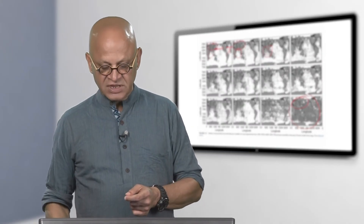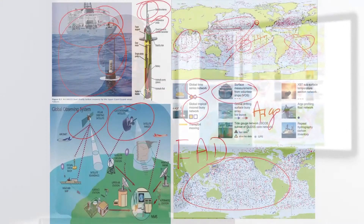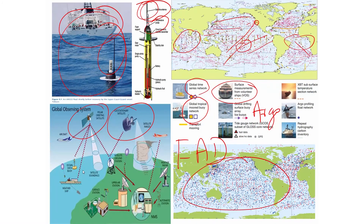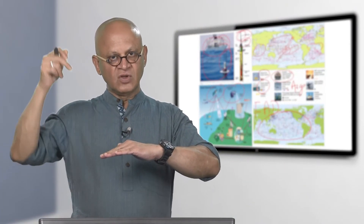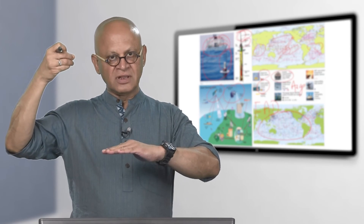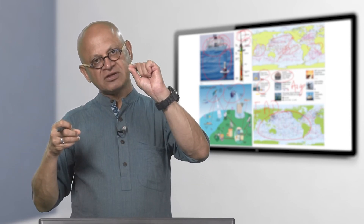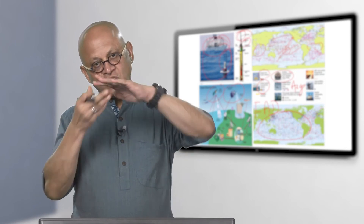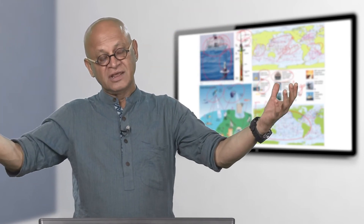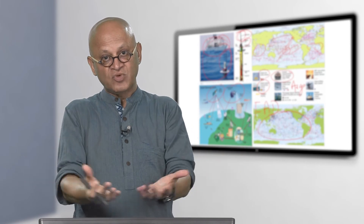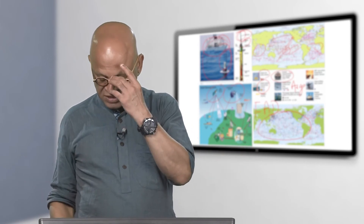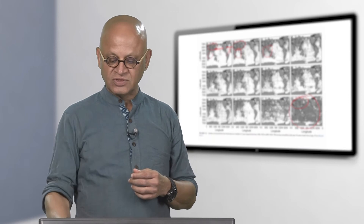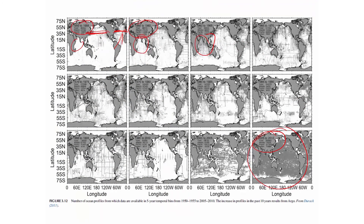Why do we need profiles? Satellites can look at the surface only — whether radiation coming from the surface or a laser measuring return, it can only penetrate a few centimeters to a few meters. The ocean is several kilometers deep, which is very important because we said thermohaline circulation can take down heat and gases and put them down there. So we must measure profiles in the ocean, and this is now heavily facilitated by the Argo floats.